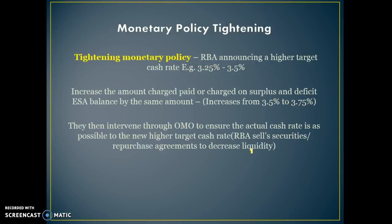If they want to tighten monetary policy, moving from say 3.25% to 3.5%, they increase the amount charged or paid on surpluses and deficit exchange settlement account balances.